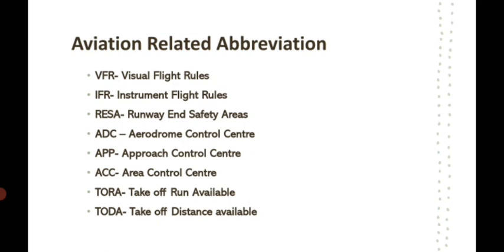ADC is Aerodrome Control Center. In layman's language, the airport and its surrounding areas — including the runway — is called the aerodrome. Approach Control Center handles the aircraft when it is descending before landing or climbing after takeoff from a particular height. Area Control Center covers a large area, handling the climb and cruise level, and takes care of the portion between one unit and another.